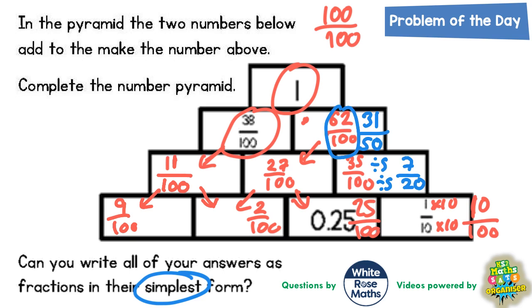27 will only divide by 3, 9, 1 and 27. None of which will divide into 100. Therefore 27 one hundredths cannot be simplified. That's the final answer. 11 one hundredths can't simplify because 11 is a prime number. 9 will only divide by 3, 9 and 1. And none of those will divide by 100 except for 1. But there's no point in dividing by 1 because you'd still be left with 100. So 9 one hundredths can't be simplified.